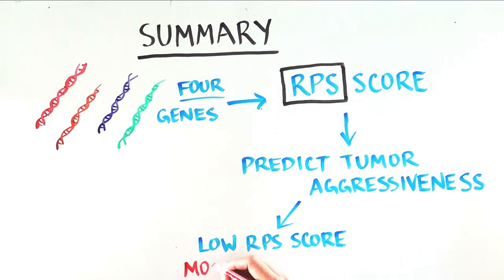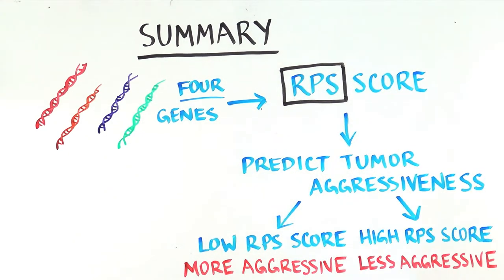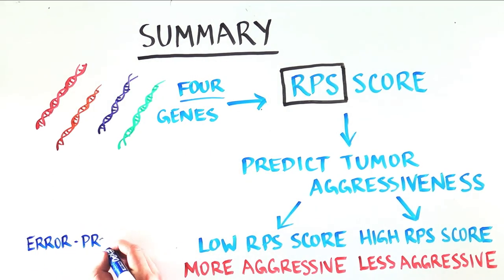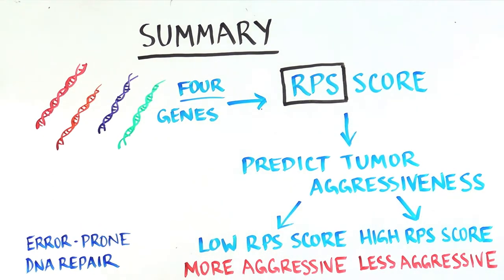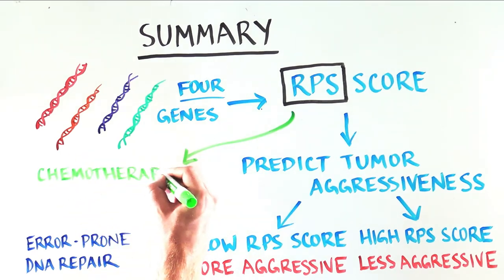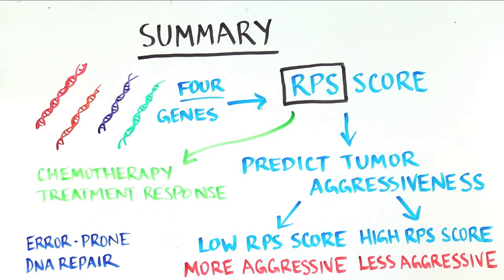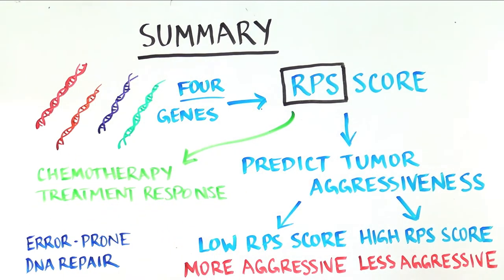This RPS score can predict tumor aggressiveness. A low RPS score corresponds to a more aggressive tumor, and this is because the tumor is repairing DNA using the error-prone method. Interestingly, the RPS score can also predict which patients are more likely to respond to a specific category of chemotherapy.